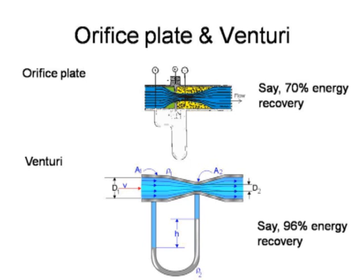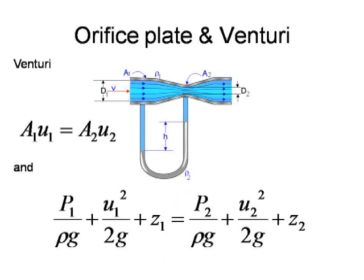The venturi, in fact, has a fairly short lead-in section and a fairly long lead-out section, which isn't illustrated very well in the lower diagram. If we just look at the venturi to develop the equation, it's the same equation for the orifice plate.